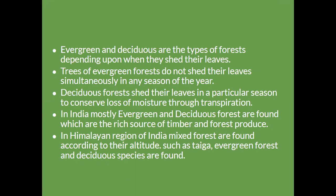The distribution of natural vegetation is primarily determined by climate. A major part of the original vegetation has been destroyed by man to meet various needs. At present, about one-fifth of the total area of India is under forest, whereas ideally it should be about one-third. The natural vegetation of India ranges from tropical to arctic regions and can be broadly classified as tropical rainforests, tropical deciduous forests, mountain forests, mangrove forests, and desert vegetation.